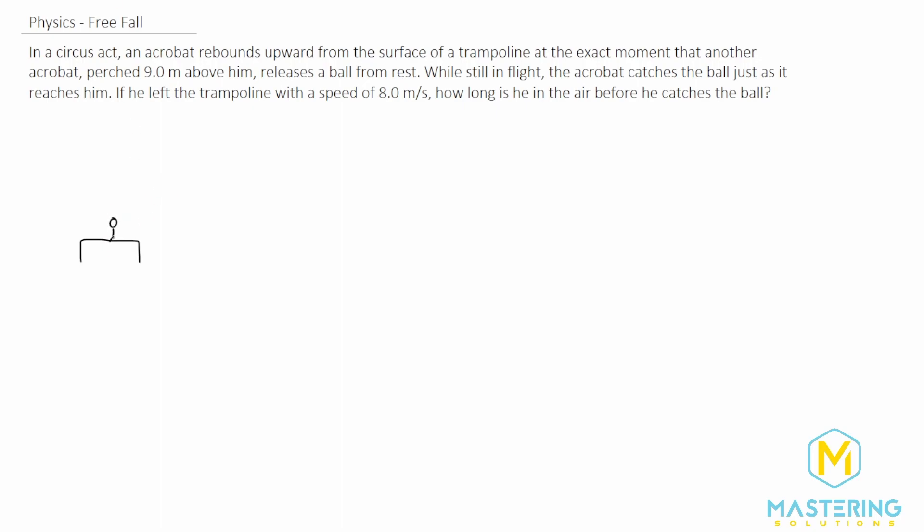we have the acrobat jumping off the tramp and then way up above him, we have another acrobat who drops a ball off of a perch and it's going down. So this distance they tell us is that he is 9 meters above this acrobat down here.